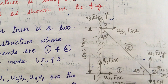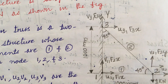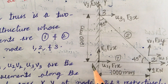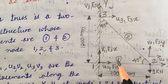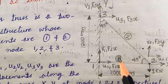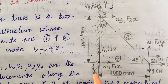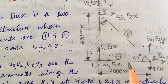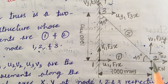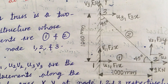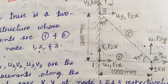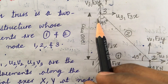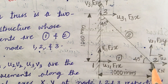When the problem is given like this, you are supposed to redraw it in your paper. You are supposed to label element 1 with node 1 and node 2. Similar to the concepts of bar elements, you work out finite element methods of trusses. This is element 2, circled, with nodes 2 and 3.